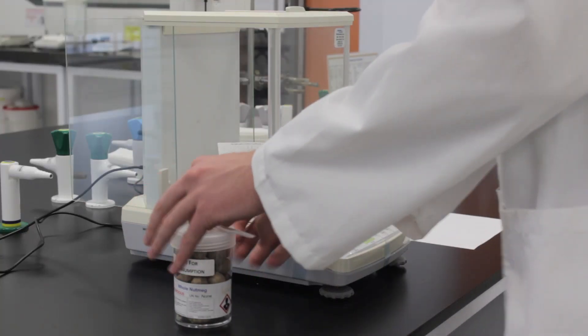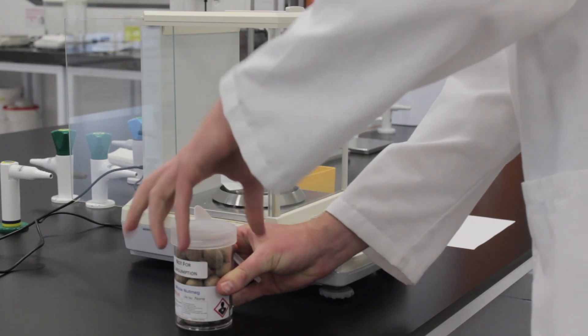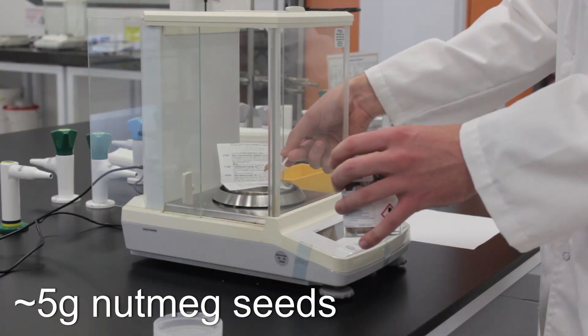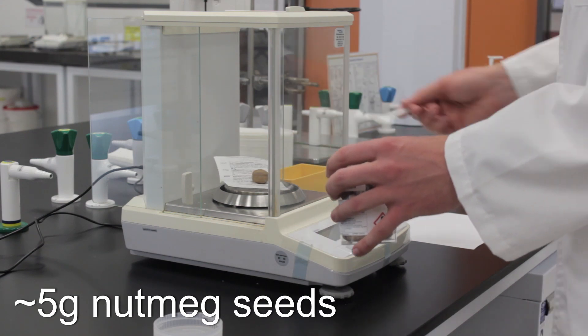First we need to grind up our nutmeg to allow for easier chemical extraction. Weigh out about 5 grams of whole nutmeg seeds on the mass balance. You should need about one or two seeds.